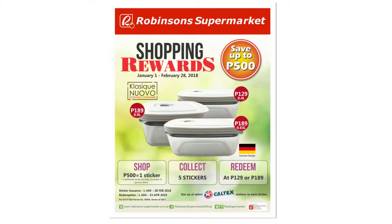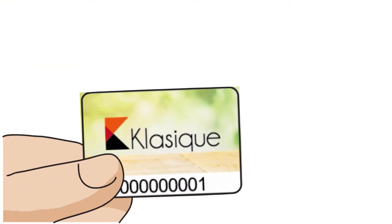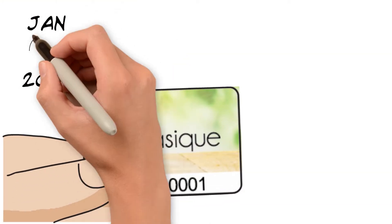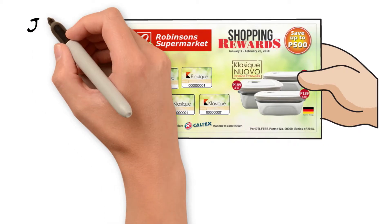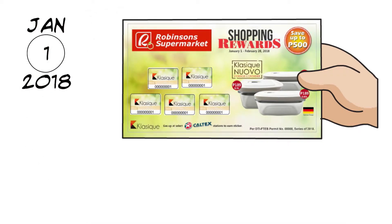Classique Nuovo Storage Container Promotion exclusively at Robinson Supermarket. Sticker issuance period is on January 1st until February 28th, 2018. Redemption period is on January 1st until April 23rd, 2018.